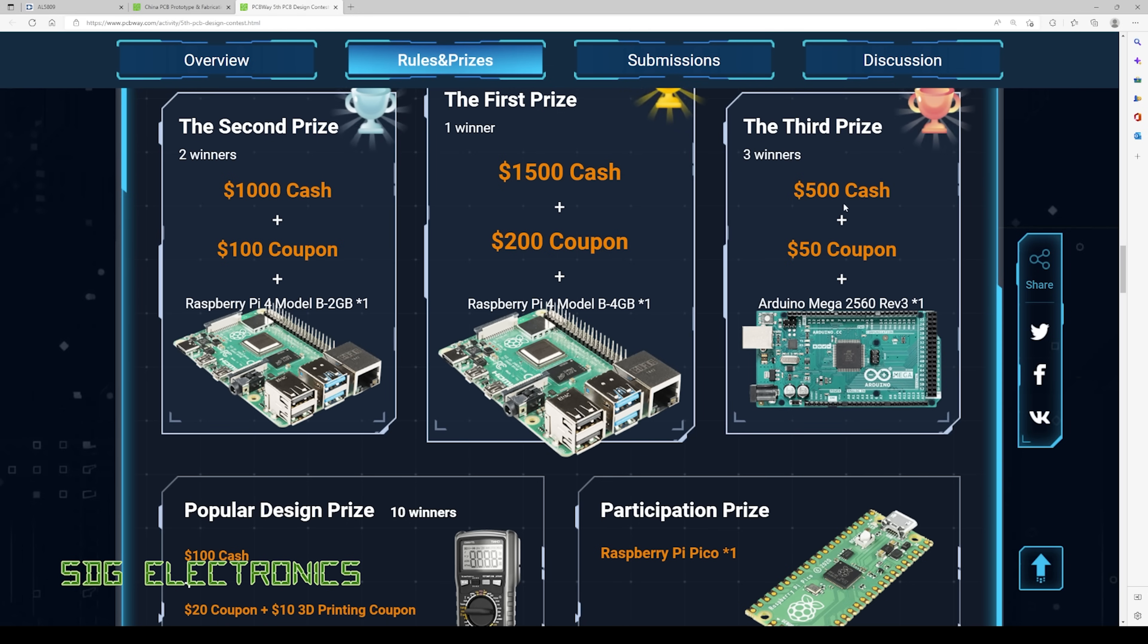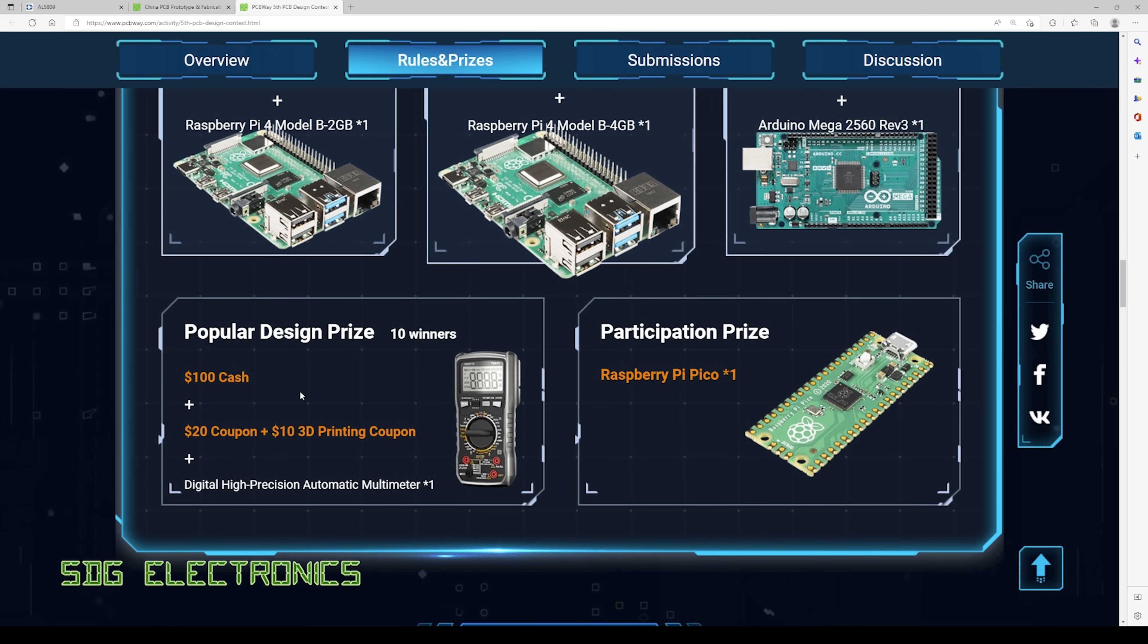The second and third prize is also quite significant and they've also got quite a few other prizes here so 10 winners of $100 cash plus coupons plus a multimeter and everyone who participates also gets a Raspberry Pi Pico.